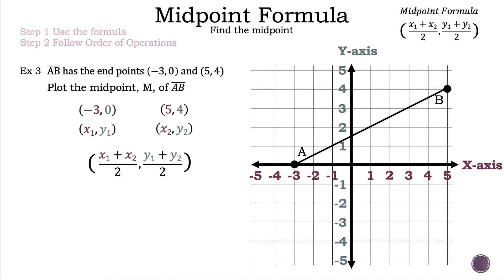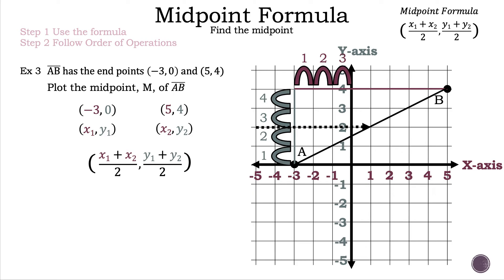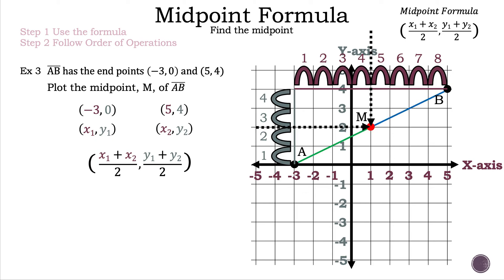Before we begin with the substitution, let's show you another way to do this using the graph. We draw a vertical line so that the end of the line is on the same line as point B, then count: 1, 2, 3, and 4. We draw a dotted line halfway in between, all the way to segment AB. Then we draw a horizontal line and a dotted line halfway across to segment AB — and now we've found point M, our midpoint.